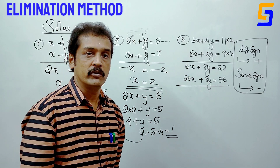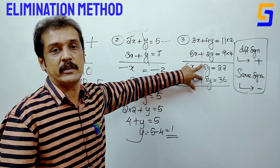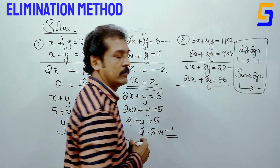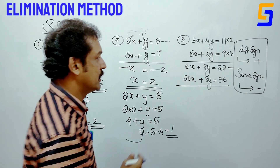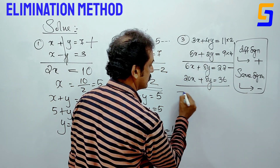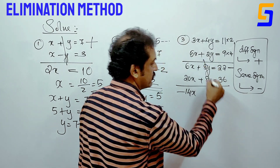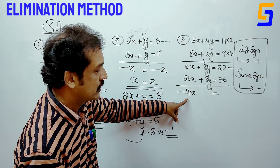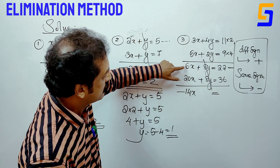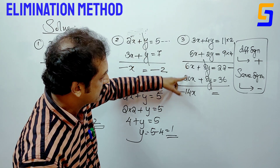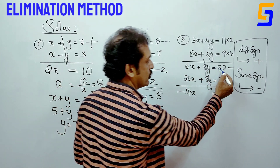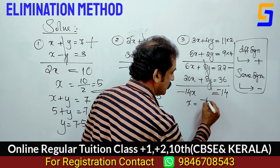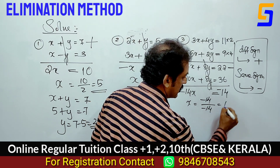We have 2 equations here. We subtract them. 6x minus 20x gives minus 14x; 8y cancels to 0. 6x is 20x, so 20x minus 14 gives minus 14. x equals minus 14 by minus 14, answer is 1.